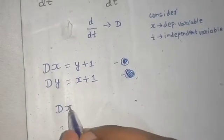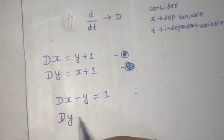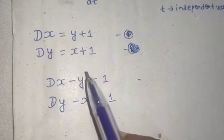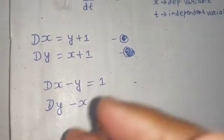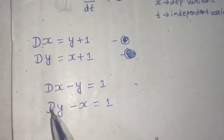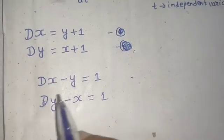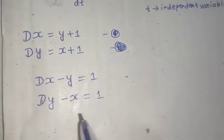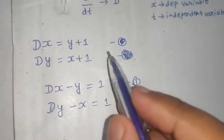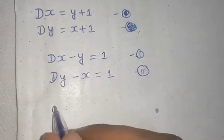We can rewrite them as D(x) - y = 1 and D(y) - x = 1. To eliminate, we can operate the first equation by D — that will bring a D(y) term in both equations, allowing cancellation. Alternatively, operating the second equation by D would eliminate x.